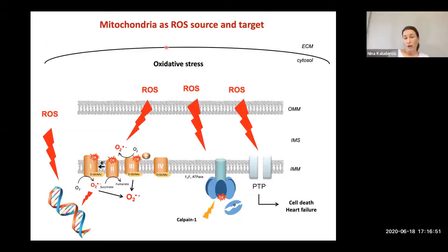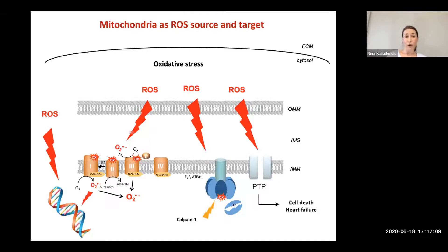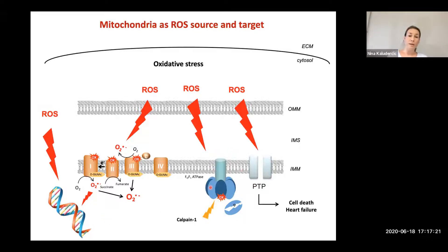We established that mitochondria are a major source of ROS, and MAOs also contribute to this ROS formation. But mitochondria can also be a target. The respiratory chain complexes 1, 2, and 3 can be oxidized and are targets of ROS, which in turn exacerbates further superoxide formation from the respiratory chain. Mitochondrial DNA is very susceptible to oxidation, ATP synthase can also be oxidized, and the permeability transition pore is more prone to open under oxidative stress conditions.